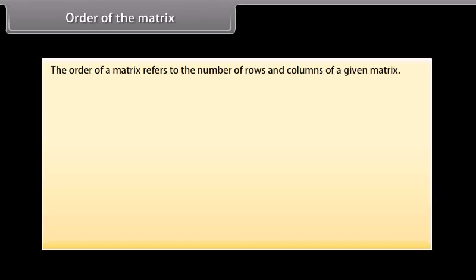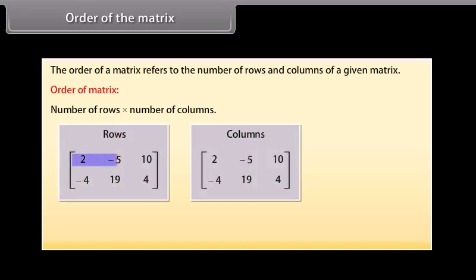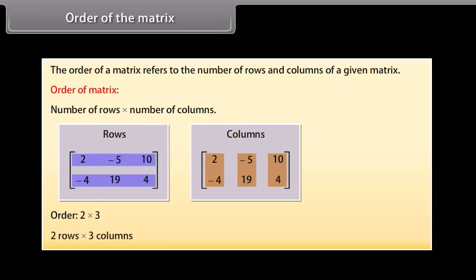Order of the matrix. The order of a matrix refers to the number of rows and columns of a given matrix. By convention, the order of a matrix is given by number of rows by number of columns. Here we can see two pictures of the same matrix with the rows and columns highlighted. The order of this matrix is 2 by 3, that is, 2 rows by 3 columns.